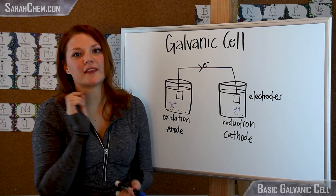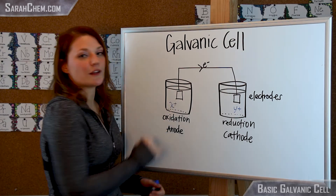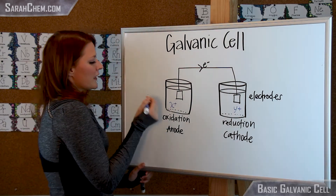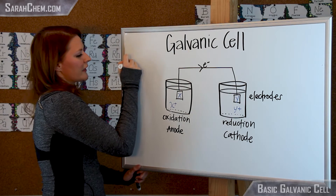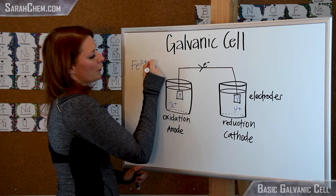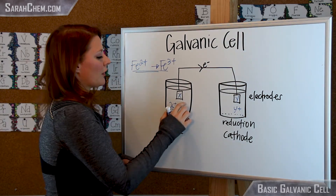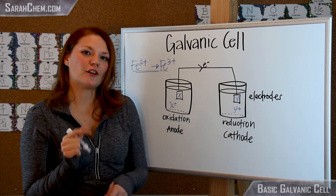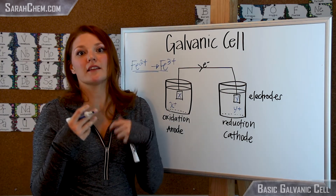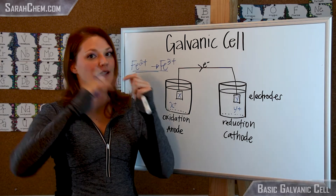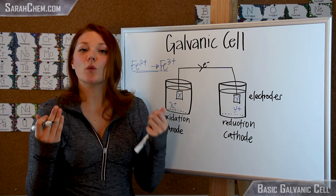A brief mention about the electrodes: quite often the electrode will be the metallic form of whatever's in solution — so this would be x and this would be y. But let's say we have an example with iron, going between Fe2+ and Fe3+. In that case you wouldn't want an electrode made of iron because it would muddy up the reaction. So oftentimes you'll see an electrode made of platinum. Platinum can conduct electrons from one location to another but won't participate in the reaction.